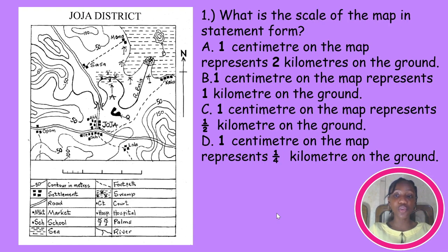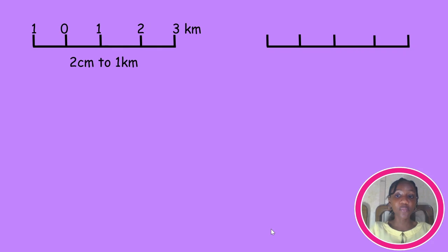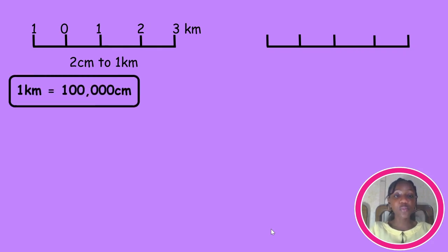Firstly, we're going to measure the distance between the two lines, and on doing that we get two centimeters. Since we don't have numbers on it, we can deduce the values and hence the interval between the numbers. Looking at past WAEC examinations, the scale of this graph can either be one of two options. For the first one, the interval between them can be one, and hence our values will be 0, 1, 2, 3 kilometers. So we're going to have two centimeters representing one kilometer, and recalling that one kilometer equals 100,000 centimeters.